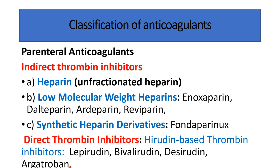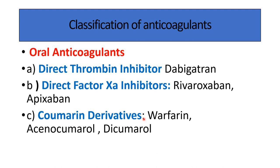Argatroban is the synthetic derivative, while lepirudin, bivalirudin, and desirudin are natural compounds. Oral anticoagulants include direct thrombin inhibitor dabigatran, direct factor 10a inhibitors rivaroxaban and apixaban, and the coumarin derivatives warfarin, acenocoumarol, and dicoumarol.